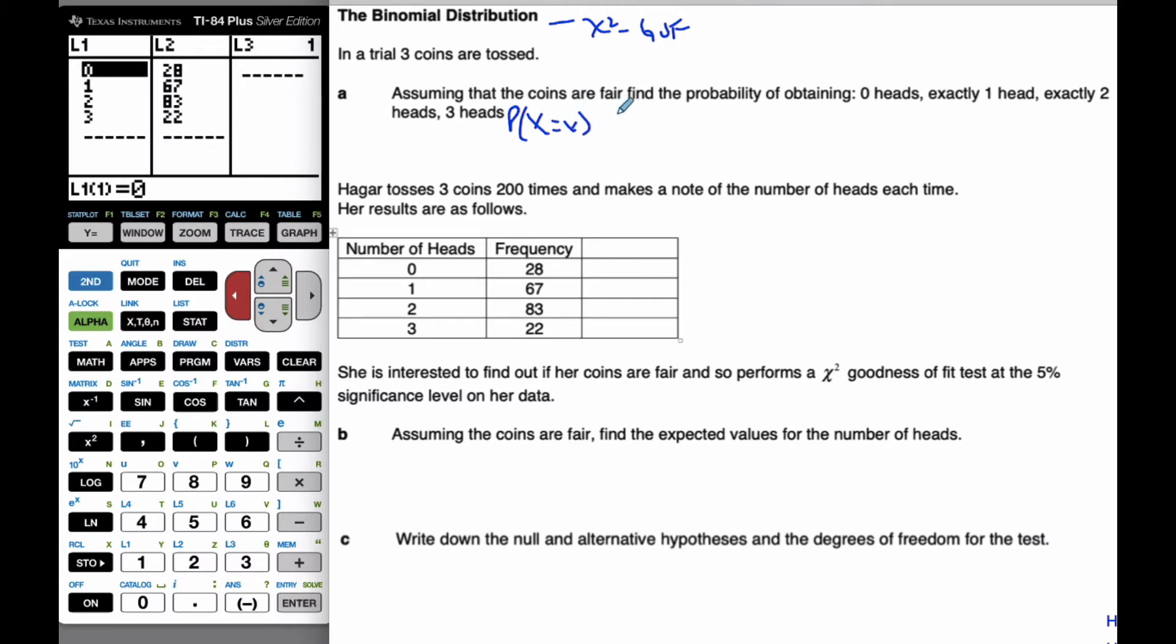I know that this is going to be the probability. I'm going to find that, and I know that little x is equal to zero, one, two, or three. These are my possibilities that exist for tossing three coins.